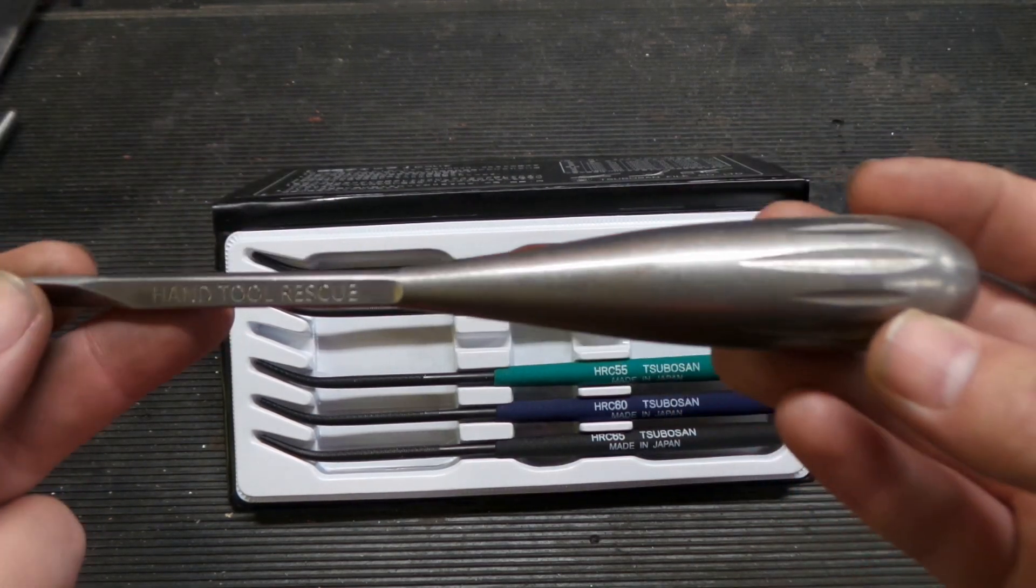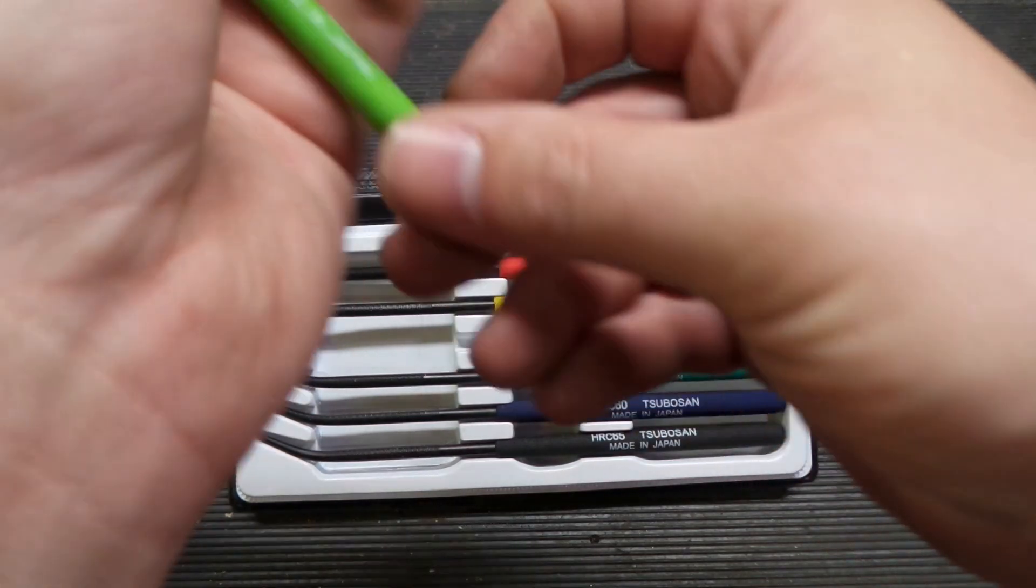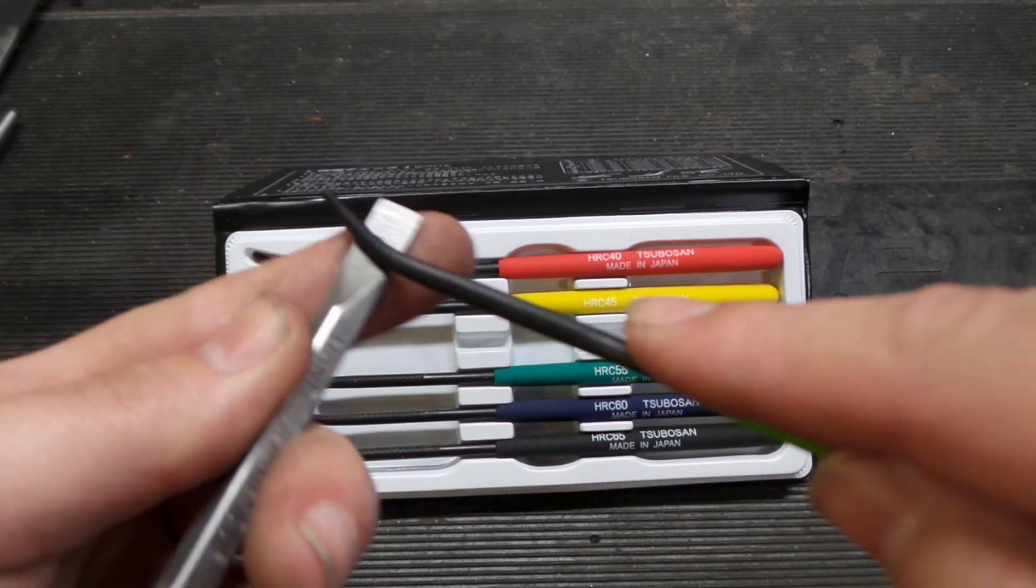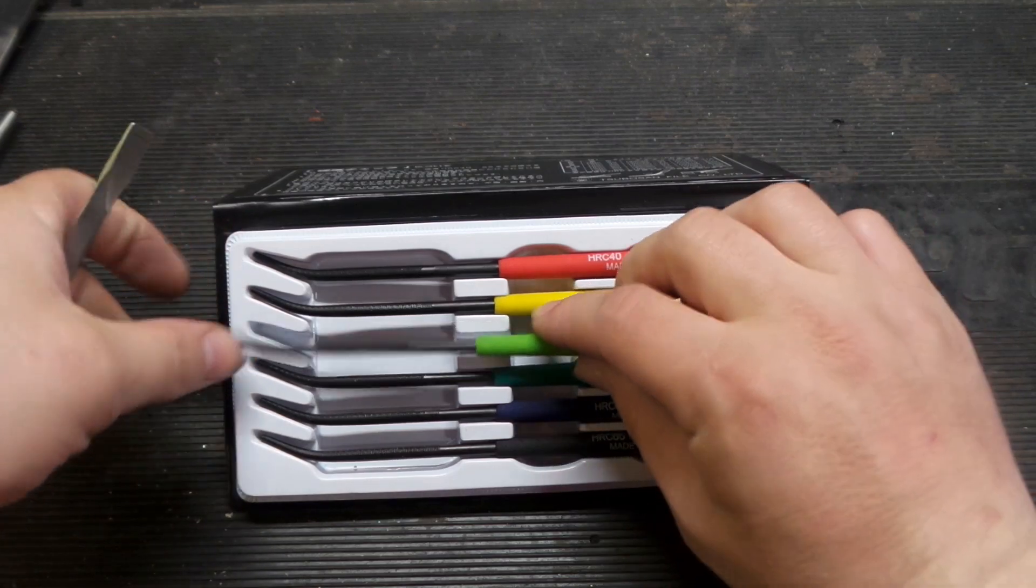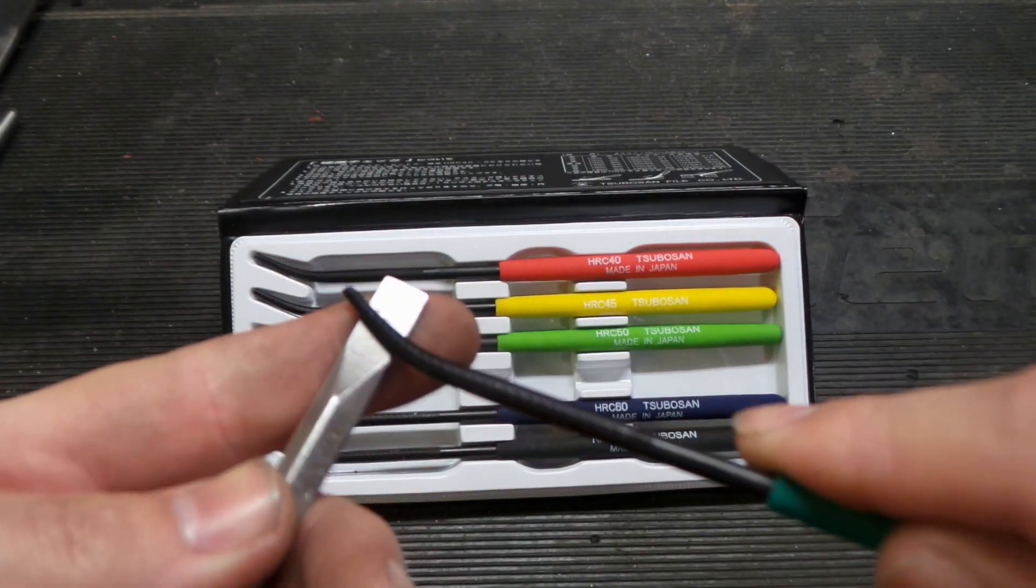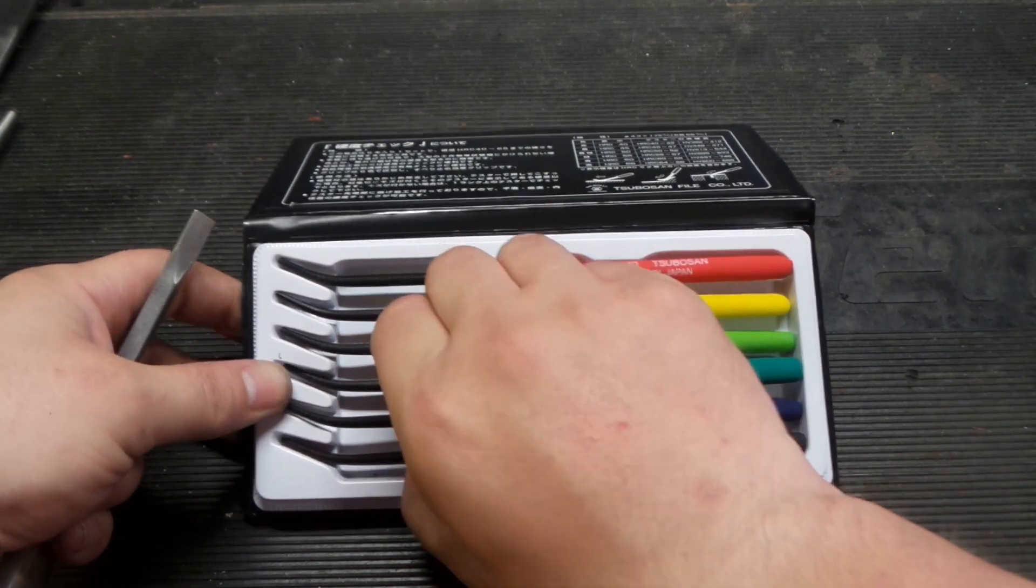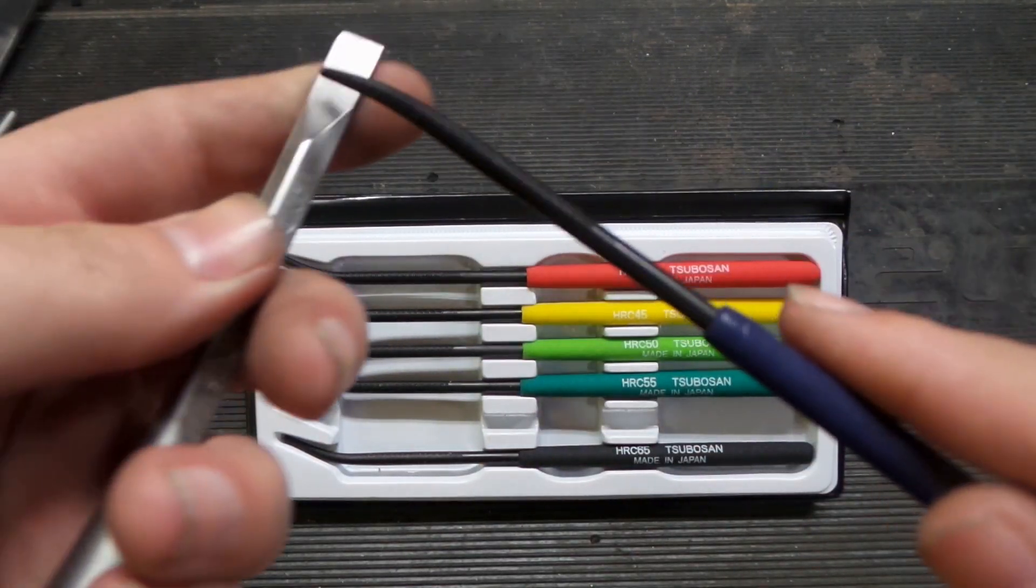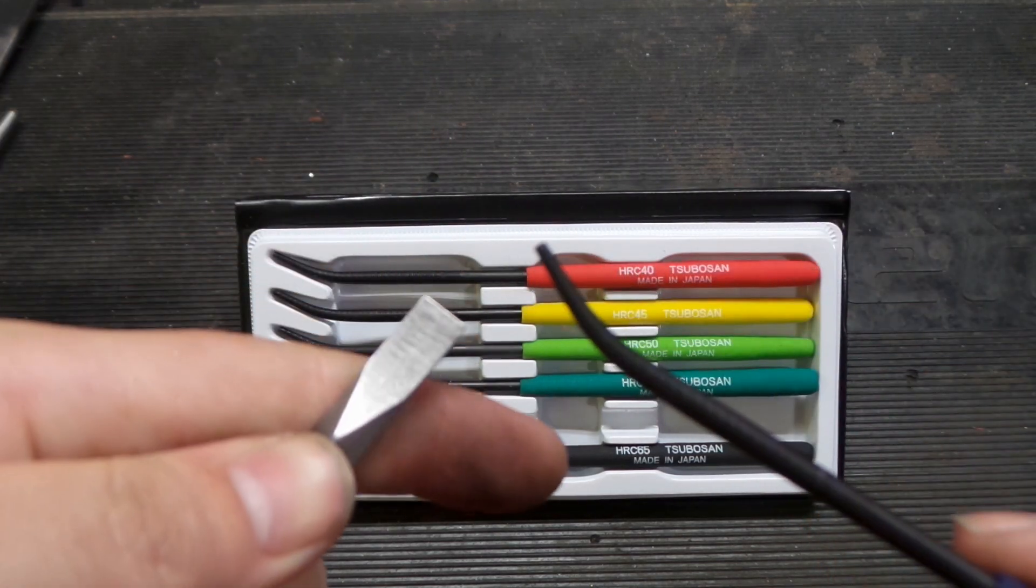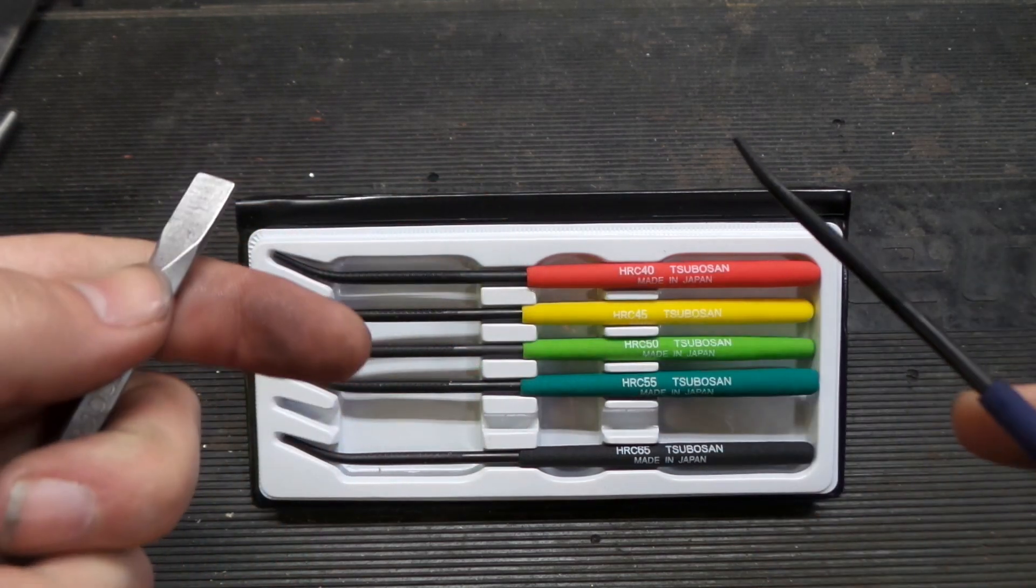And what we'll try here is one of these fancy premium screwdriver thingamajigs that I picked up at some place. Let's see what that does here. Oh yeah, that just skates. Still skating. That was 55. Let's try 60. I would expect it to be somewhere around here. I think I'm starting to get a bite on it, which is surprising. They got that pretty hard.